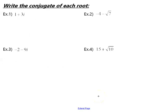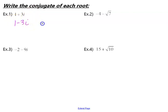When we put this into practice and we want to write the conjugate of each root: if 1 plus 3i is a root, the conjugate root theorem tells us that 1 minus 3i is also a root. And for example 2, if negative 4 minus the square root of 7 is a root, then negative 4 plus the square root of 7 is also a root.